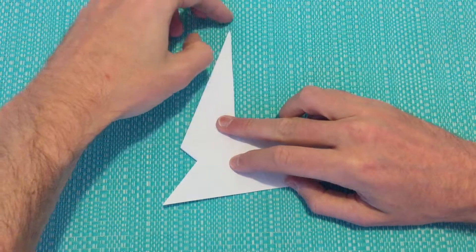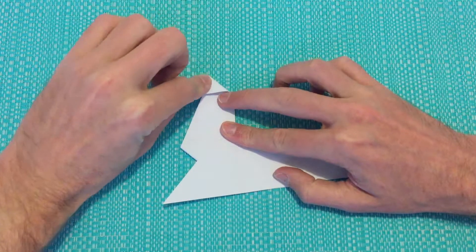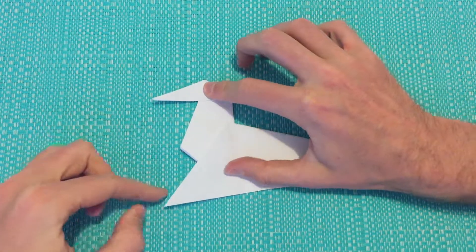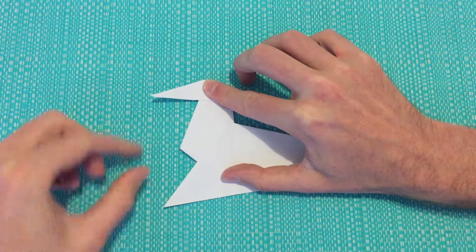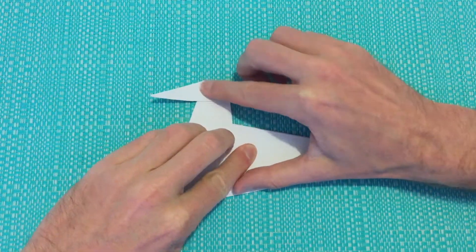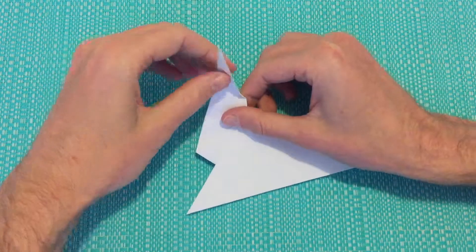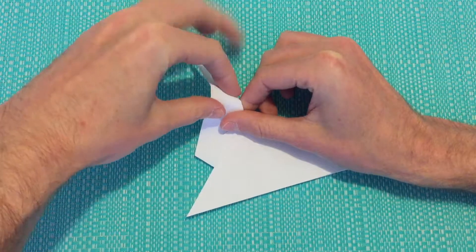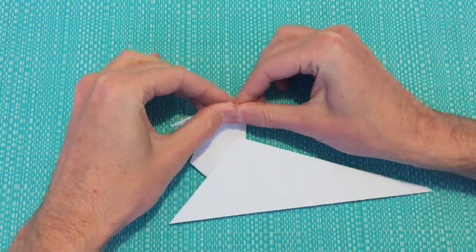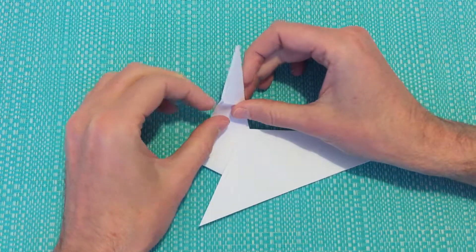So now we'll take this top left hand point, facing it out towards the left, about the same length as this bottom point here. Only roughly though, doesn't matter too much. We'll create a crease. Open that up, and just fold it around the other side as well. Just working on making that crease nice and strong. Then we can open it up.